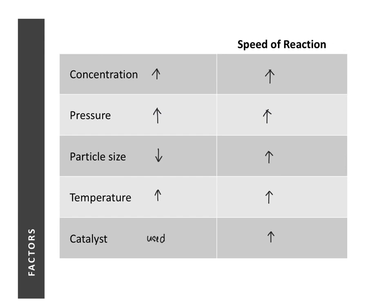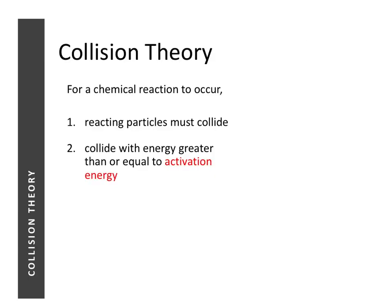Now that we have learned how the different factors affect the speed of reaction, let us look at why they affect it in this way. In order to understand this, we need to learn something called the collision theory. There are two main things to know: one, for a chemical reaction to occur, particles must first collide — only when they collide can a reaction possibly occur.